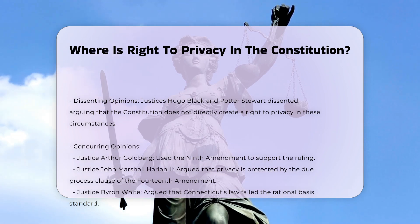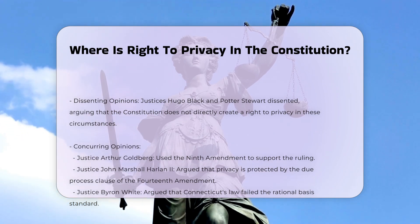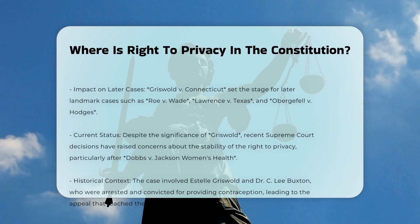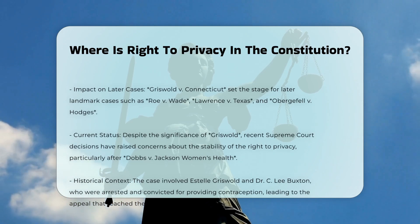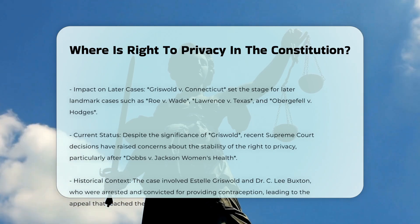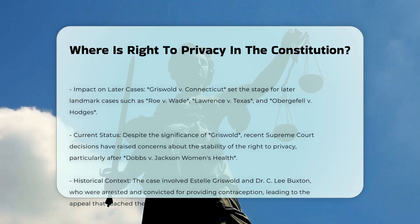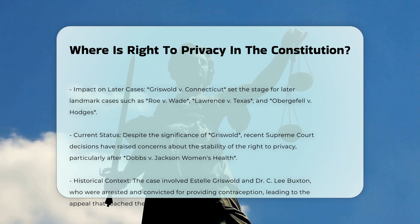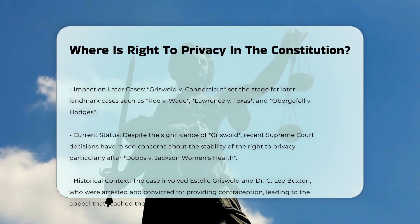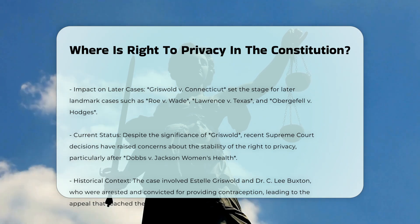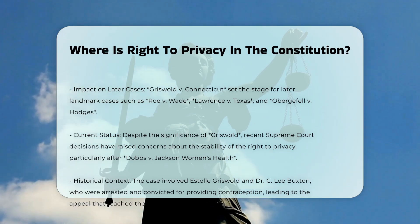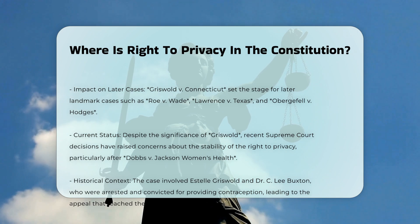Federal and State Laws: While there is no explicit constitutional right to privacy, federal and state laws have been enacted to protect privacy. Examples include the Fair Credit Reporting Act, the Privacy Act of 1974, and the Health Insurance Portability and Accountability Act, HIPAA.